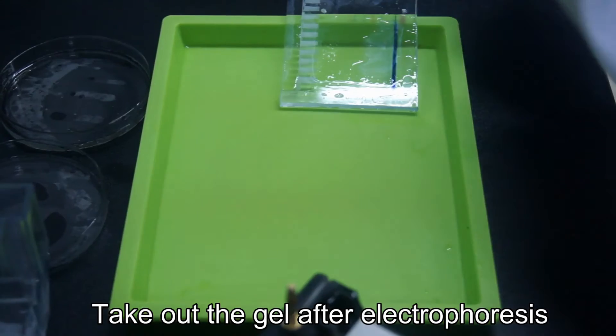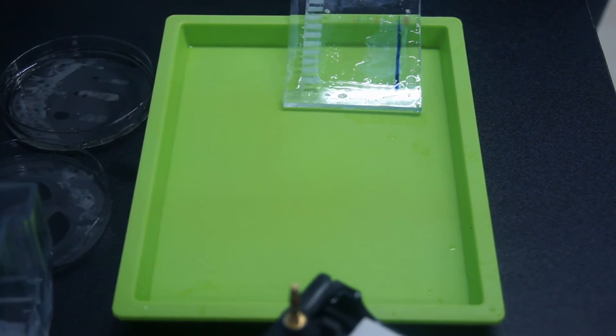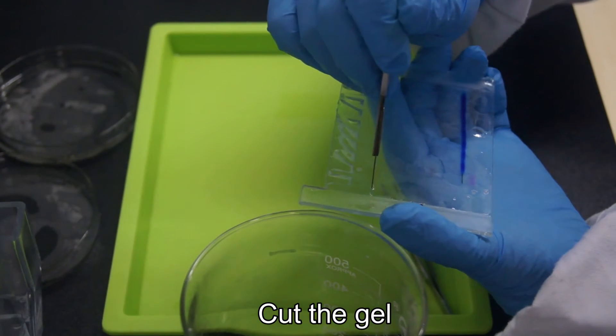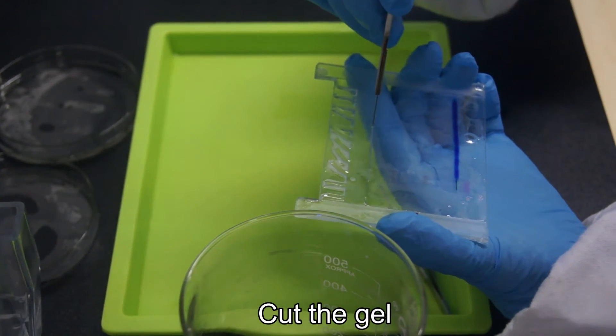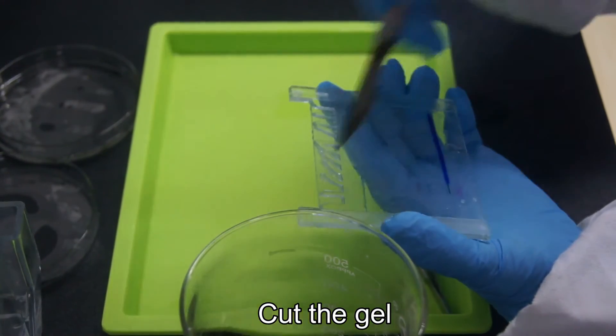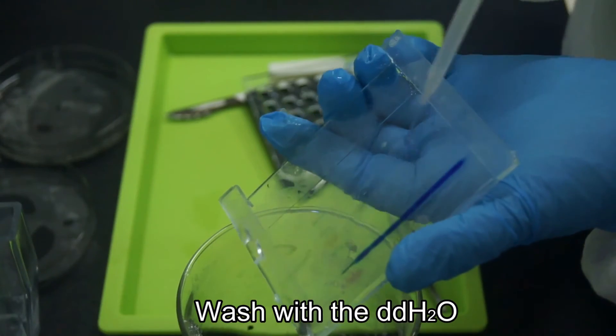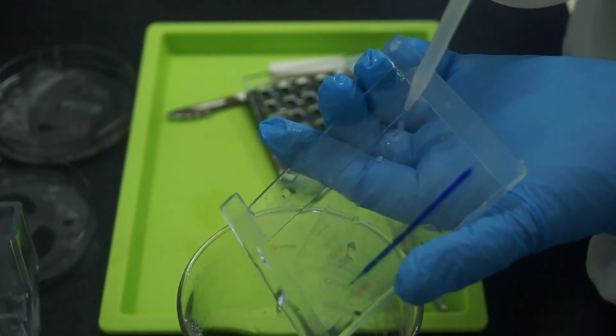Electrotransfer - wet transfer: Take out the gel after the electrophoresis is finished. Cut the gel. Wash it with DDH2O to remove the electrophoresis salts and detergents.